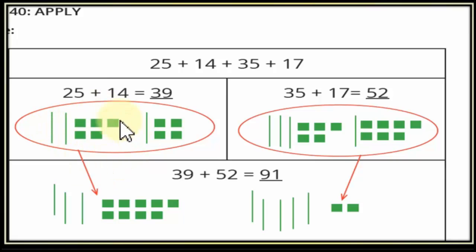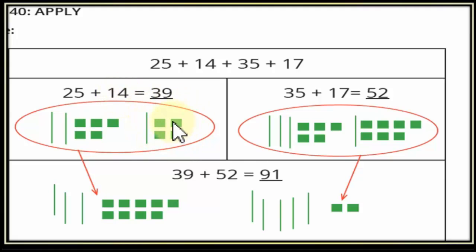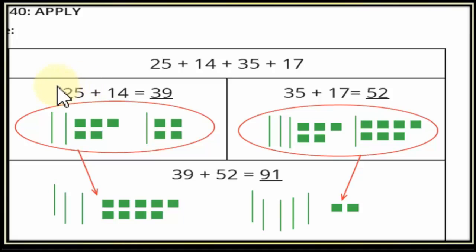قدامكم هنا 25: 2 sticks بيعبروا عن الـtens، وfive squares بيعبروا عن الـones. و14: one stick بيعبر عن الـtens، وfour squares بيعبروا عن الـones. هنجمع الـones على الـones: five plus four ones = nine ones. ونجمع الـtens: two plus one = three tens. يبقى ناتج 25 وـ14 هو 39.